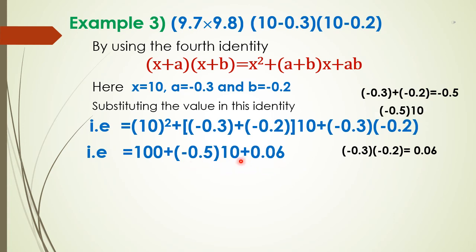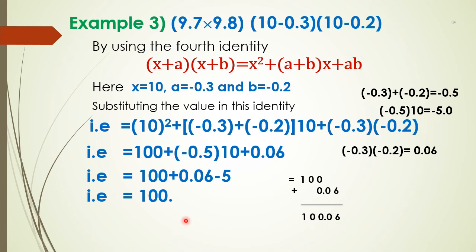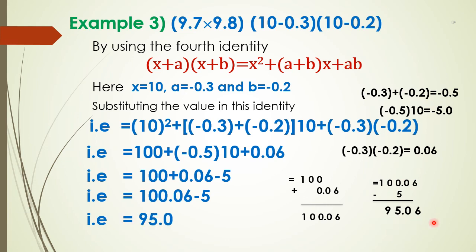In the middle term, minus 0.5 into 10 is minus 5. Therefore, 100 minus 5 plus 0.06. Now 100 plus 0.06 is 100.06, so the result is 100.06 minus 5, which is equal to 95.06. This is the final answer.